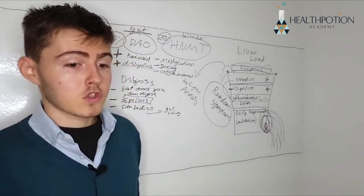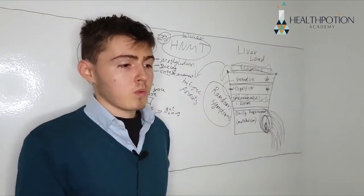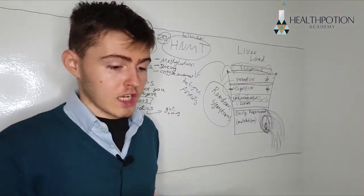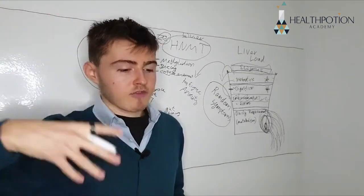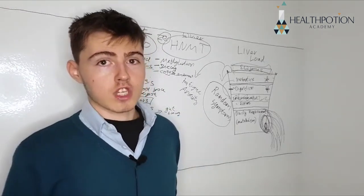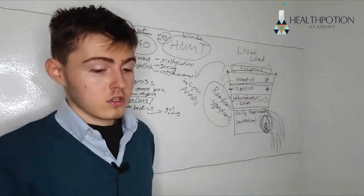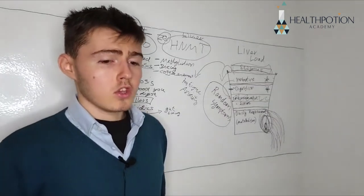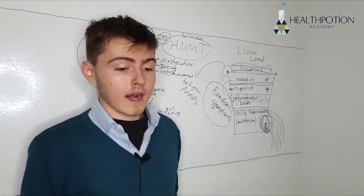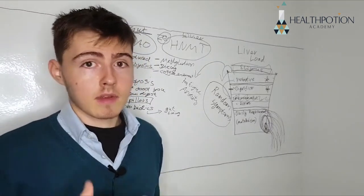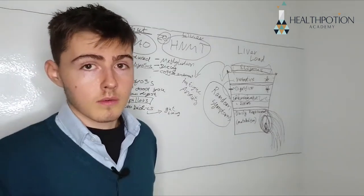Another good one is a 23andMe genetic report. The reason I like that is all other tests are basically just a snapshot in time — but your genetics don't change. You can get a genetic report for about $80, then put it into programs like Genetic Genie or Promethean, and they give you a full report explaining what all the different things mean. If you need any help with that, I explain people's reports for free. With testing, I also like to use bioresonance. Bioresonance is really cool because it's not just testing what's in the gut — it's testing what the body doesn't like in the gut or in the whole body.